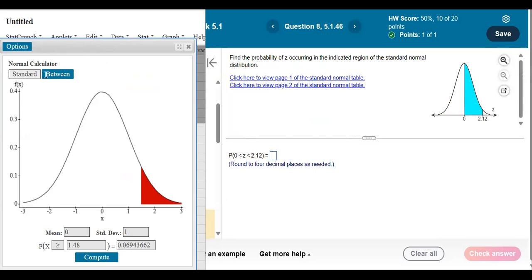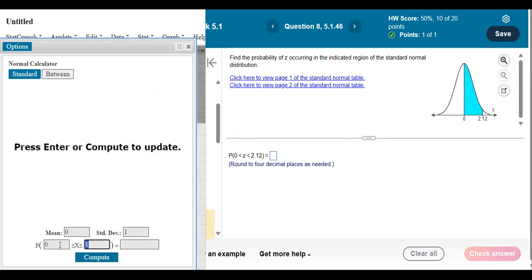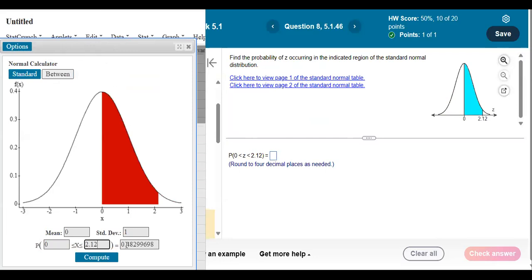And then instead of it being on standard, switch it to between and just type in the two z-scores. Ours are 0 and 2.12. Enter. And there it is. I'm going to have to round this to four decimal places, so I'm going to get 0.4830.